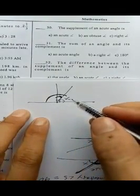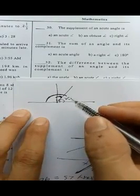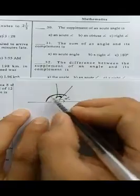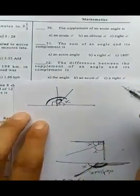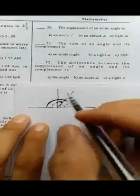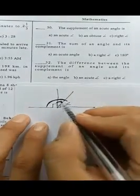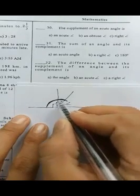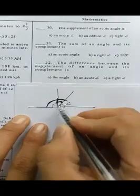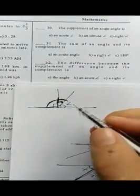The question is the difference between the supplement of an angle and its complement. Supplement minus the complement equals 90 degrees or a right angle. This is the supplement of that angle, and this is its complement. The difference — supplement minus complement — gives us a right angle, 90 degrees.